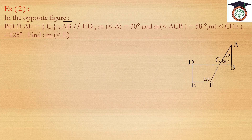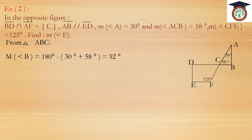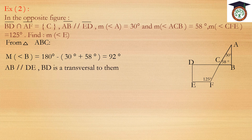Exercise 2. In the opposite figure: BD intersects AF at C, AB is parallel to DE, the measure of angle A equals 30 degrees, the measure of angle ACB equals 58 degrees, and the measure of angle CFE equals 125 degrees. Find the measure of angle E. From triangle ABC: measure of angle B equals 180 minus (30 plus 58) equals 92 degrees. Since AB is parallel to DE and BD is a transversal, measure of angle D equals measure of angle B equals 92 degrees — alternate angles.